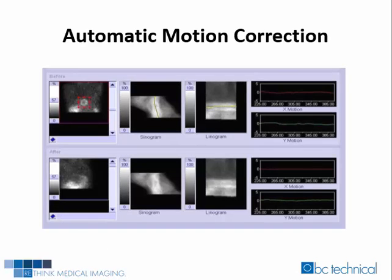Automatic motion correction was performed on a Siemens eSoft workstation. The manual states to place the red box around the heart without touching the organ. Once the red box is around the heart, go to the linogram and sinogram images and compare the results. The horizontal line on the series frame indicates the row of pixels used to create the sinogram. The same row of pixels from each frame is extracted and stacked from top to bottom to create the image. All edges of the sinogram should be smooth, and a rough or displaced edge may indicate patient motion.